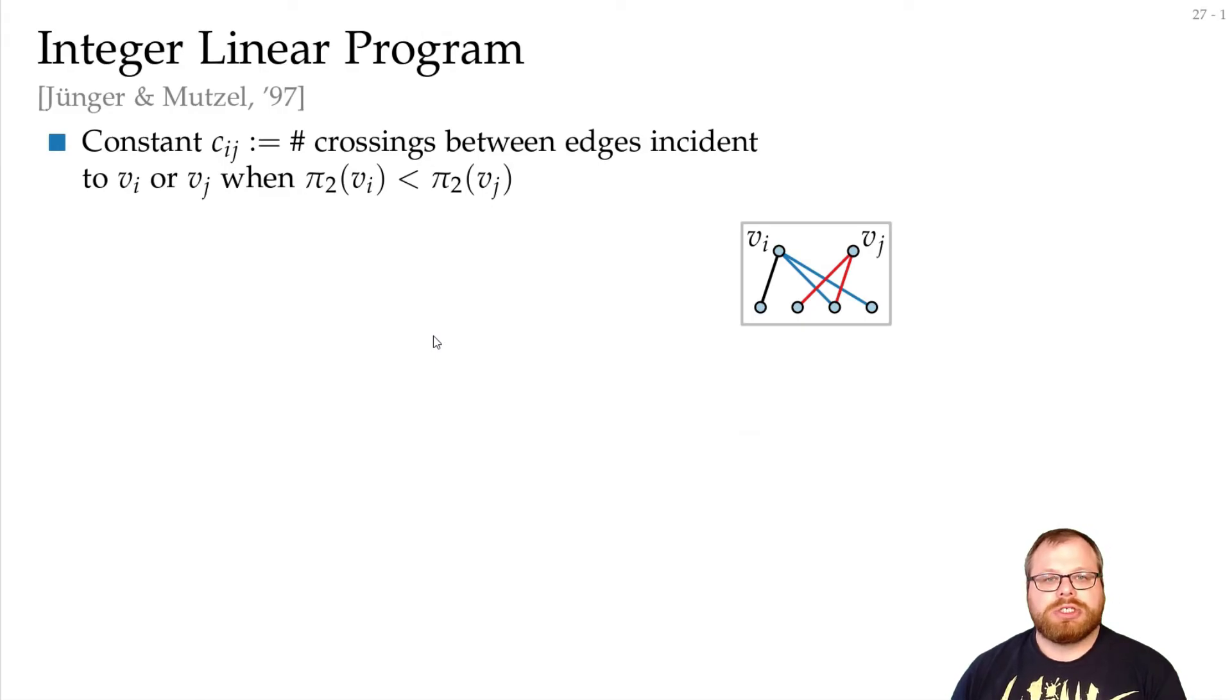Finally, we'll look at the integer linear program formulation, which was proposed by Jünger and Mutzel in 1997. This uses some pretty cool observations. We look at some constants. A constant Cij tells us how many crossings do we get by edges incident to Vi and Vj if we put Vi to the left of Vj. In this example, if Vi is to the left of Vj, then we have 3 crossings. On the other hand, if we switch it, we will have 2 crossings. So Cij here will be a 3, and Cji will be a 2.